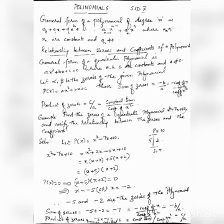Similarly, we find the product of zeros. The product = (-5) × (-2) = 10, since minus times minus is positive. That is the same as the constant term divided by the coefficient of x². Here, the constant term is 10 and the coefficient of x² is 1, so 10 ÷ 1 = 10. Hence, we have verified the result.